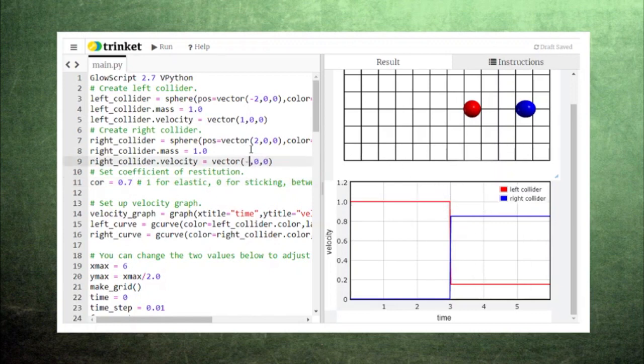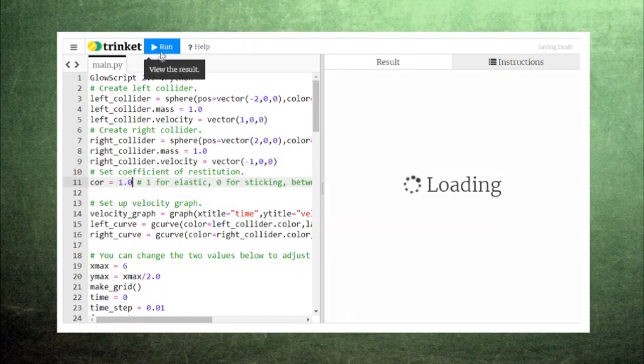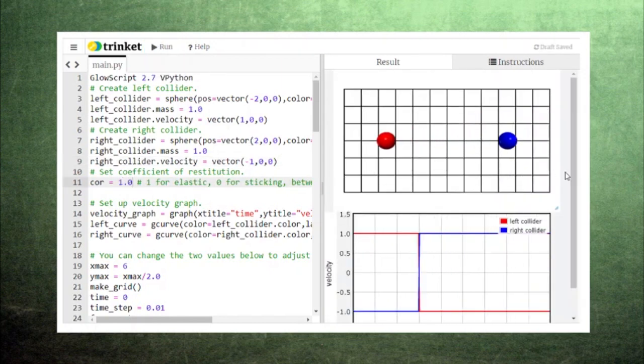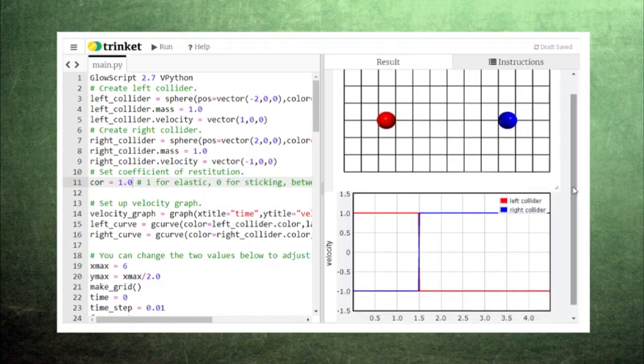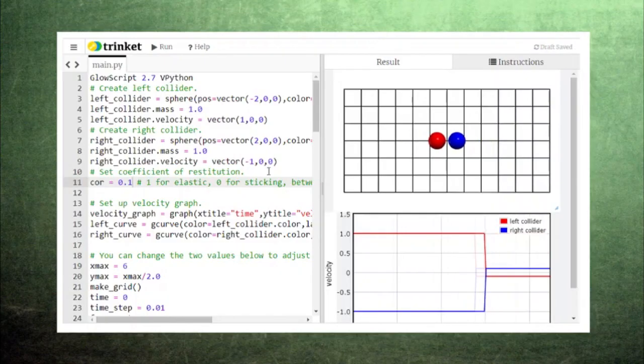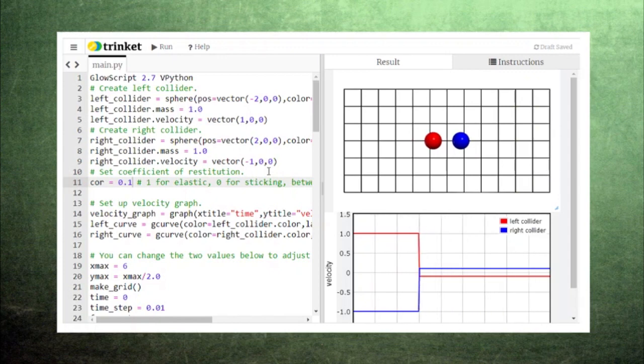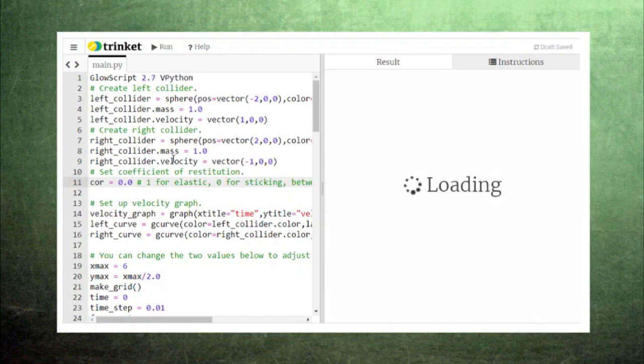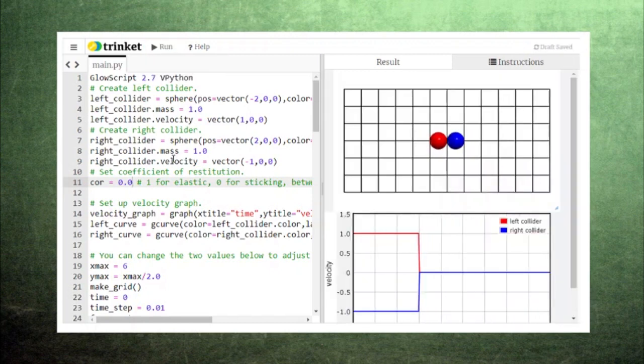Another interesting case to examine is what happens when the colliders approach each other with the same mass and opposite velocities. With a coefficient of 1, they bounce off of each other and exchange velocities. With a coefficient of 1 half, they bounce off of each other with half their original velocities. With a coefficient of 1 tenth, they bounce off of each other with 1 tenth of their original velocities. And with a coefficient of 0, the lowest possible value, they stop each other entirely.